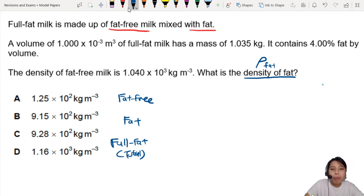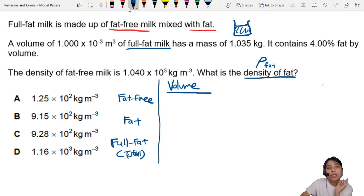Alright, so what do we know about these things? Let's turn this into a table. So we are given volume. That's one of the first things given to us. Volume of full fat milk. That means the whole container, one jug of milk, that is the full fat. So that one, we can write it down here. One times ten to the negative three, in meter cubes.